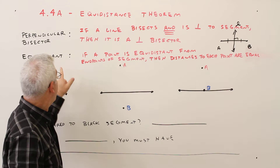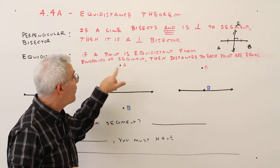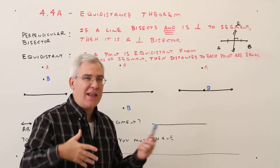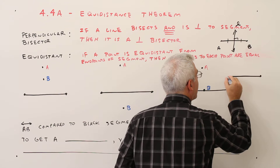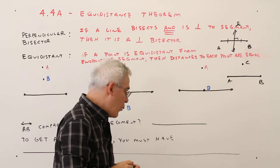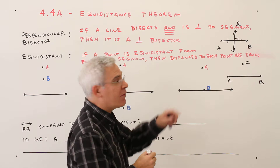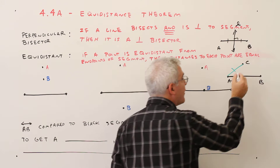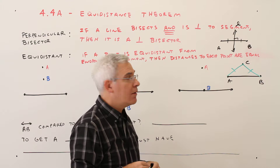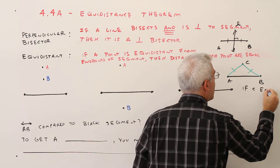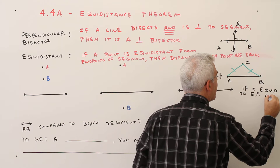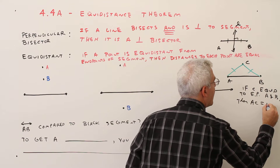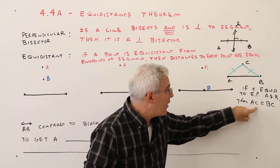The second term we want to define is equidistant. If a point is equidistant from the endpoints of a segment, then the distances to each point are equal. Here's a picture. Let's call this segment AB and that point C. If point C is equidistant to those endpoints, then the distance AC is the same as the distance BC. If there's no segment bar over the letters, that means the distance.